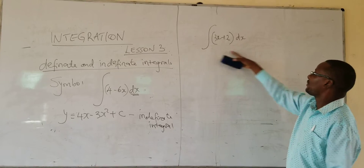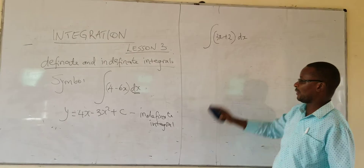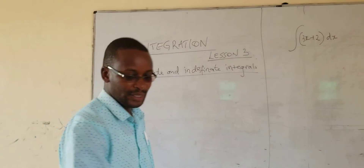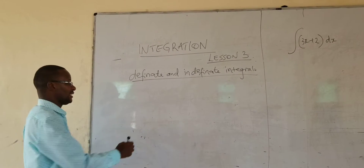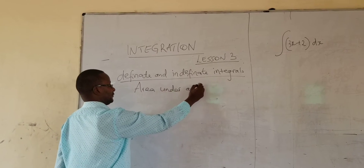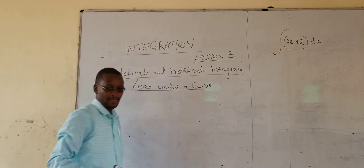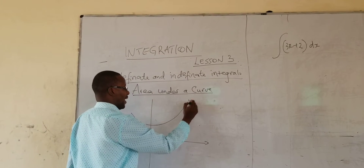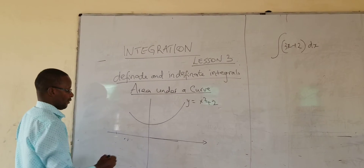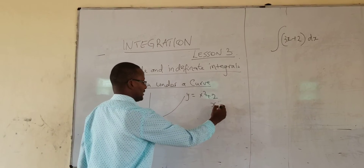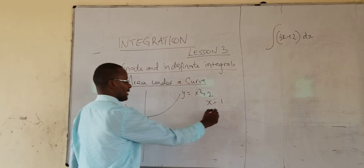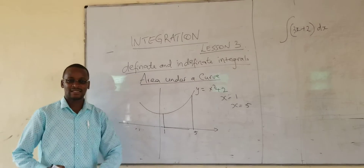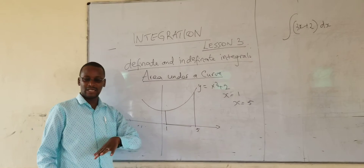When you come to definite integration, I would like us to think about it in terms of area and a curve — this will give us a better idea. So, if I have a curve of Y equals X squared plus 2, and I want to get the area between that curve and the line X equals 1 and the line X equals 5 — you are familiar with this kind of work from the previous topic of area approximation using the mid-ordinate rule and the trapezium rule.